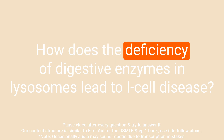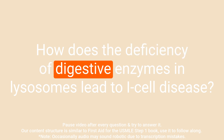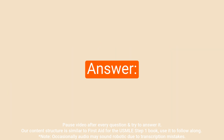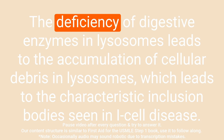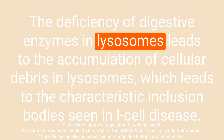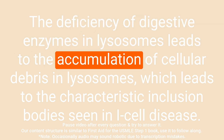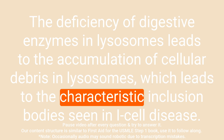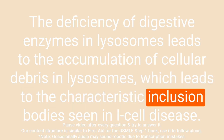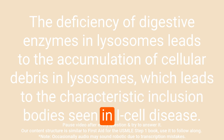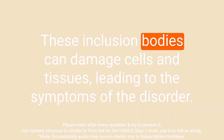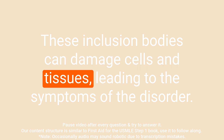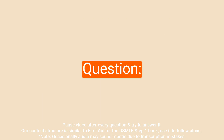Question: How does the deficiency of digestive enzymes in lysosomes lead to I cell disease? Answer: The deficiency of digestive enzymes in lysosomes leads to the accumulation of cellular debris in lysosomes, which leads to the characteristic inclusion bodies seen in I cell disease. These inclusion bodies can damage cells and tissues, leading to the symptoms of the disorder.